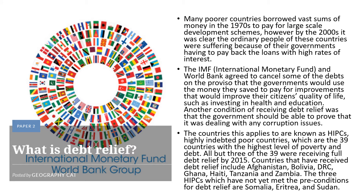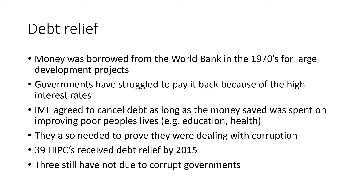The next strategy is debt relief. Money was borrowed from the World Bank in the 1970s by a number of countries, with the aim of spending it on development projects. However, by around the 2000s, it was clear the whole idea had failed. These countries were heavily in debt, hadn't been able to pay back the loan, and people's quality of life in those countries hadn't really improved. One of the reasons they struggled to pay it back was a huge interest rate — so for example, if you borrowed £100 at 10% interest, that would be £10 per year extra to repay.